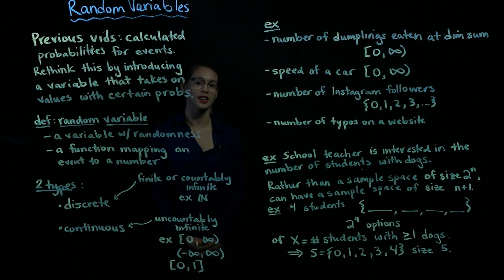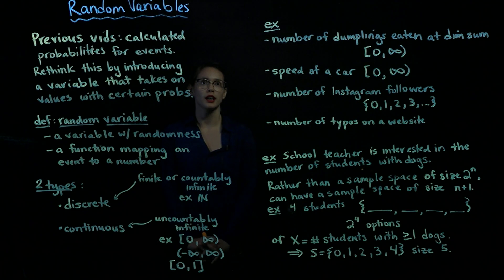In this video, we introduce the concept of random variables. So in previous videos, we were calculating probabilities for events. And we can kind of rethink how we're going to do this by introducing a variable that can take on different values with certain probabilities.